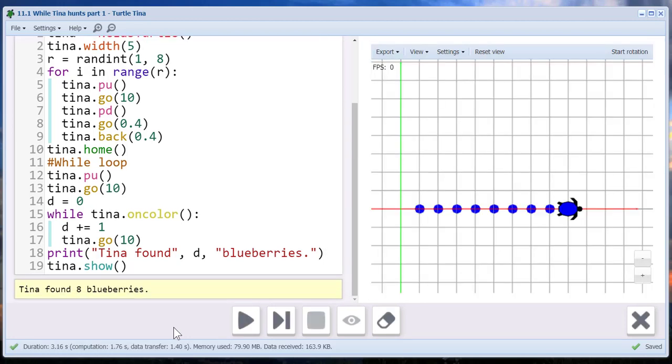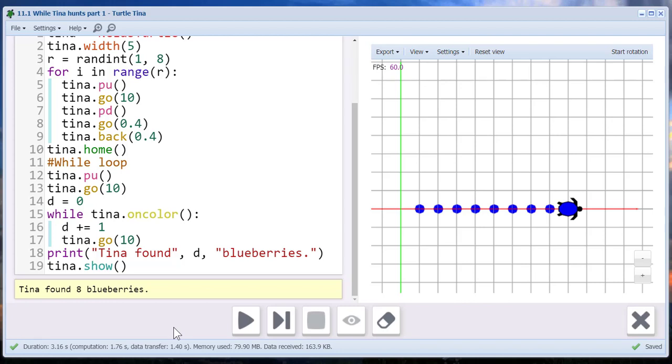Well, this time she found eight blueberries and our loop worked. It stopped after she passed the last blueberry. This is exactly what it should be doing.